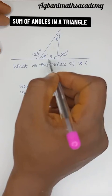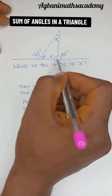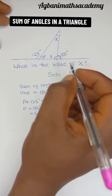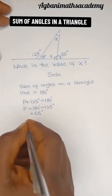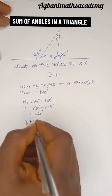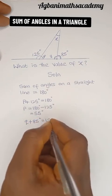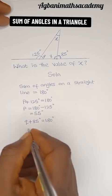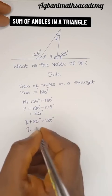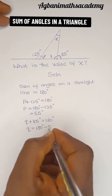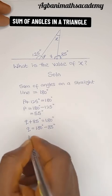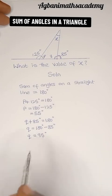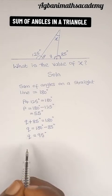Looking at this point, we can also see that this point is on this straight line. So Q plus 85 degrees is also equal to 180 degrees. 85 degrees moving to the right becomes negative, so Q is equal to 180 degrees minus 85 degrees. Q therefore is equal to 95 degrees.